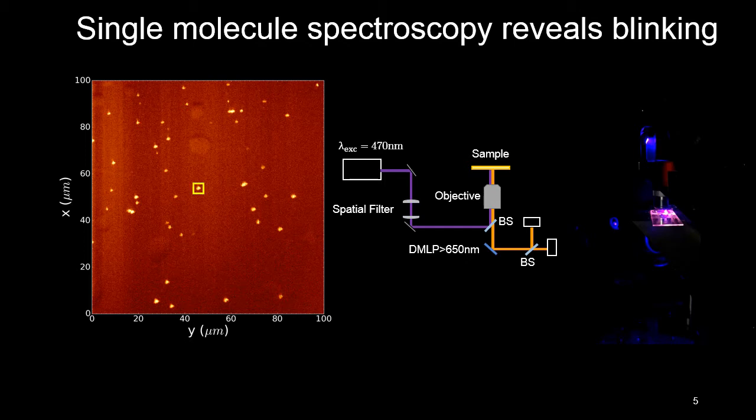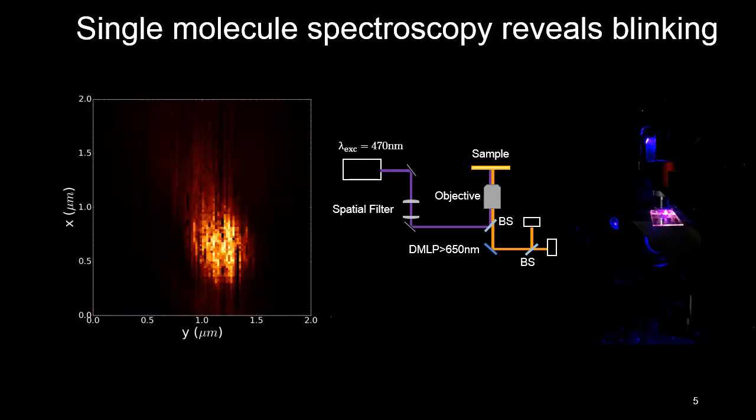We can actually zoom in on where we saw a lot of the photons and what we find is a single quantum dot. In fact, we can be quantitative about if we found a single emitter or not.